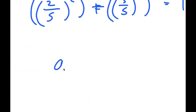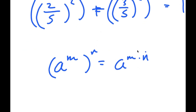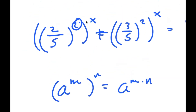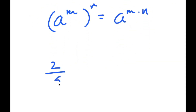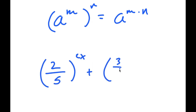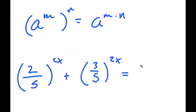From here, if I have something in the form a to the power of m to the power of n, this is equal to a to the power of m times n. So the 2 and x multiply, and I get 2 over 5 to the power of 2x, plus 3 over 5 to the power of 2x, is equal to 1.